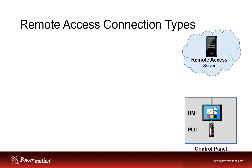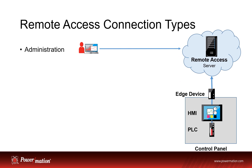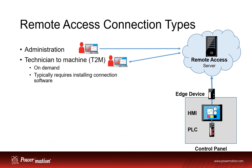There are different types of remote access connections. First, you need an edge device in the control panel. An administration account is used to configure user rights and who has access to what. The technician-to-machine connection is on-demand and typically requires connection software that is used for programming devices in the control panels.